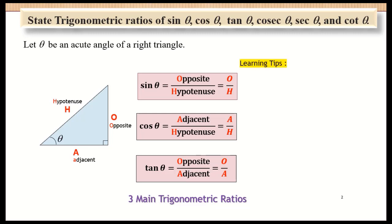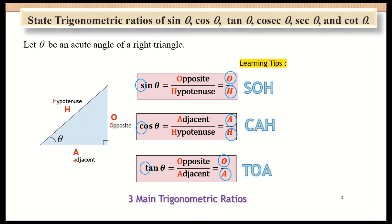I have some learning tips for you to remember these three main trigonometric ratios. We may use SOA: sine equals opposite over hypotenuse. And CAH: cosine equals adjacent over hypotenuse. And finally TOA: tangent equals opposite over adjacent.